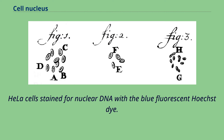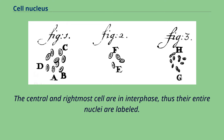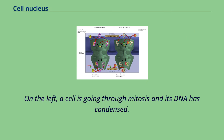HILA cells stained for nuclear DNA with a blue fluorescent dye. The central and rightmost cells are in interphase, thus their entire nuclei are labeled. On the left, a cell is going through mitosis and its DNA has condensed.